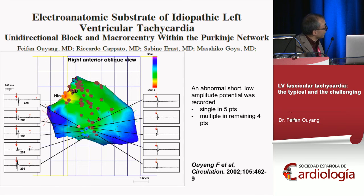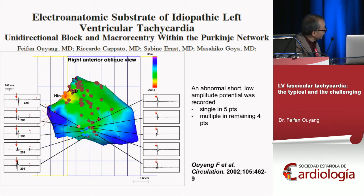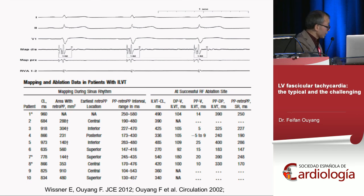We mapped 10 patients during sinus rhythm and completed the Purkinje map of the left ventricle, identifying his bundle, posterior fascicle, and anterior fascicle regions. The middle part is difficult to distinguish. Interestingly, in all patients we found smaller post-QRS diastolic cells — very low amplitude, high frequency, very small sharp potentials after ventricular activation. Some patients present a single potential, others multiple components. These were located in variable positions on the electroanatomic map.